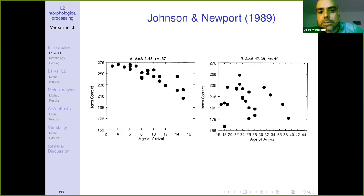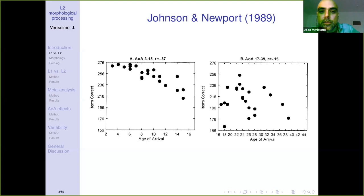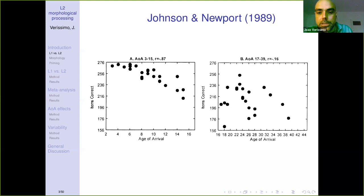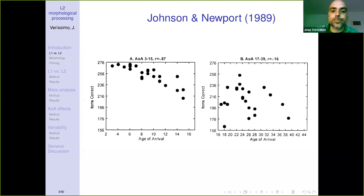One of the early studies to point this out was Johnson and Newport back in 1989. They gave L2 speakers a grammaticality judgment task, and performance was very sensitive to age of acquisition — that is, at what age these L2 speakers had started acquiring their second language. This was done with Chinese speakers who had arrived in the United States at different ages. As age of arrival becomes higher, performance tends to decrease. But also importantly, as you can see in the second panel, there is greater heterogeneity and variability among speakers when age of acquisition is late — a point I'll come back to in this talk.